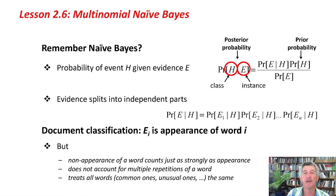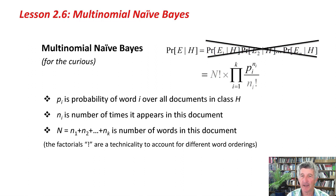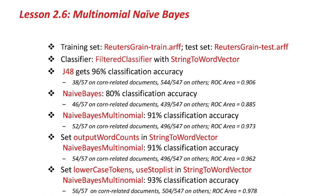Multinomial Naive Bayes is an enhancement of Naive Bayes that solves these problems. We take that complicated formula and replace it with the thing at the bottom — just forget about those exclamation marks for the moment. This is basically a product over all the words in the document of P_i, that is the probability of word i, to the power N_i, that is the number of times that word appears in the document. So it's like treating each word appearance as an independent event and multiplying them all together. Those N factorials are just a technicality that account for the possibility of different word orderings. Anyway, that's the theory — you don't have to understand that. It's very easy to use Multinomial Naive Bayes in WEKA, so this is what we're going to do.